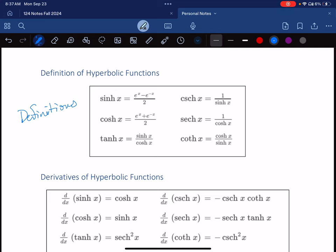is e to the x minus e to the minus x over 2. This is also, you can write as just 1 half e to the x minus 1 half e to the minus x. Either way, split it into two fractions if you want.